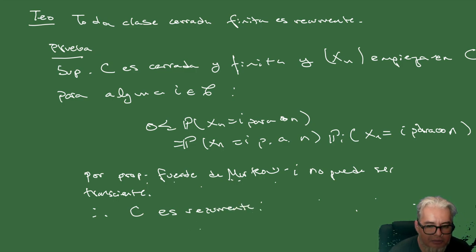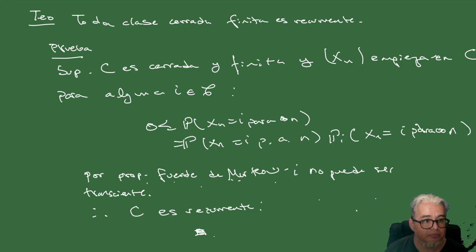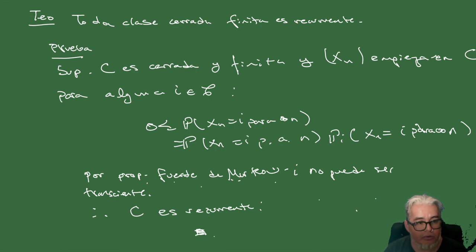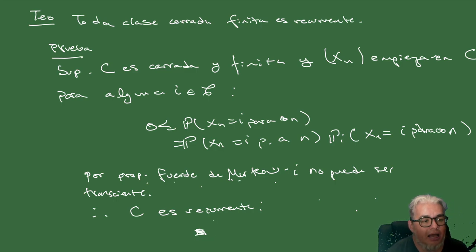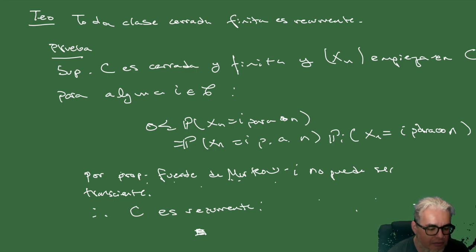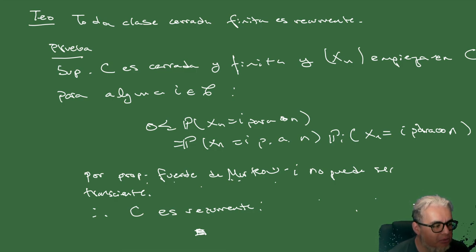Y ya terminamos. Ahora sí, hemos acabado con la introducción a cadenas de Markov. En la próxima sesión vamos a describir el proceso de apertura y cierre de canales utilizando procesos de Markov, y vamos a ver cuáles son los estados recurrentes y transientes en ese sistema. Hasta aquí la dejamos hoy y nos vemos en la siguiente sesión.